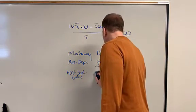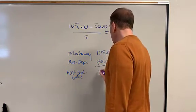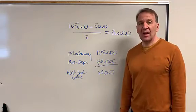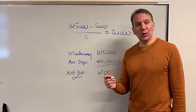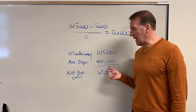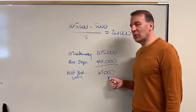After year two, there'll be $40,000 in there. So then my net book value will now become $65,000. I hope you can see now in year three, this will become $60,000, and then this will go down to $45,000.